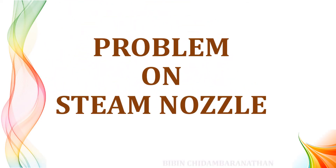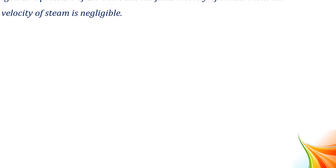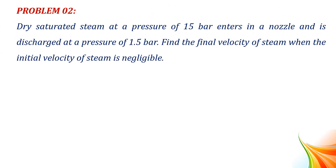Good morning and welcome to this session on solving problems on steam nozzles. Problem 2: Dry saturated steam at a pressure of 15 bar enters a nozzle and is discharged at a pressure of 1.5 bar. Find the velocity of steam when the initial velocity of the steam is negligible.